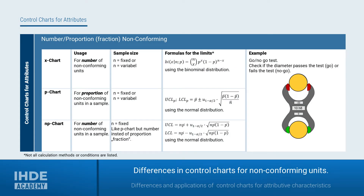For the control charts for the number or proportion of non-conforming units, there are three different charts. The X chart monitors the number of defective units; the sample size can be constant or variable, and the underlying distribution model is the binomial distribution. The P chart monitors the proportion of defective units, again with constant or variable sample size, using the normal distribution as the model. The NP chart is also for the number of defectives, using the normal distribution as its distribution model.